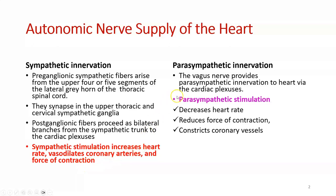Parasympathetic innervation: the vagus nerve provides parasympathetic innervation to the heart via the cardiac plexus. Parasympathetic stimulation decreases heart rate, causes bradycardia, reduces the force of contraction by the myocardium, and constricts coronary blood vessels. So the autonomic nervous system has two parts — sympathetic and parasympathetic — with opposing functions.